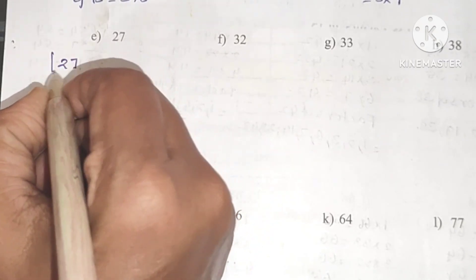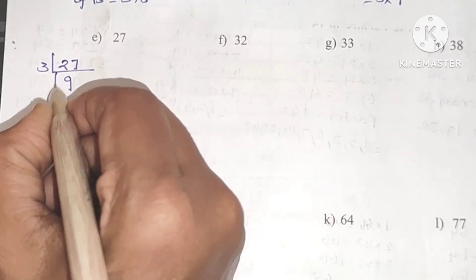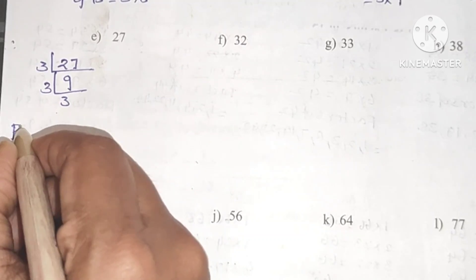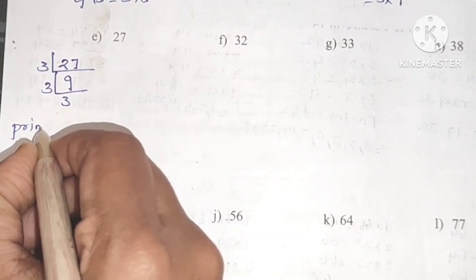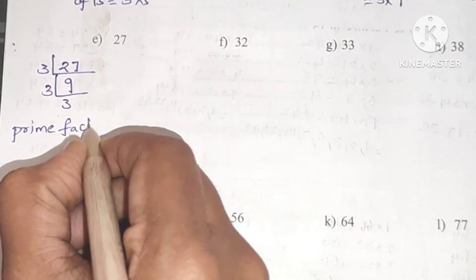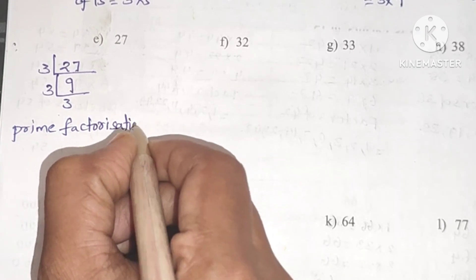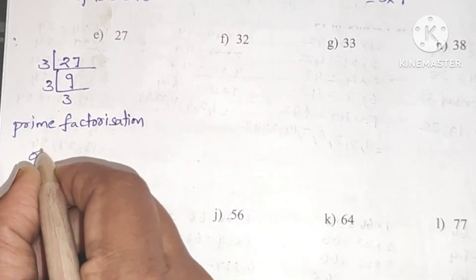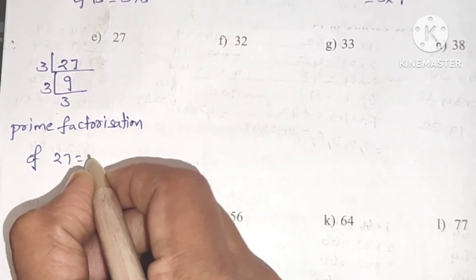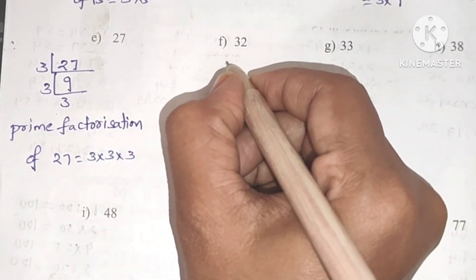Next, 27. It is in the 3 table: 3 nines are 27, then again 3 threes are 9. So prime factorization of 27 equals 3 into 3 into 3.